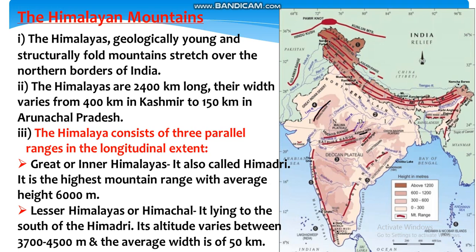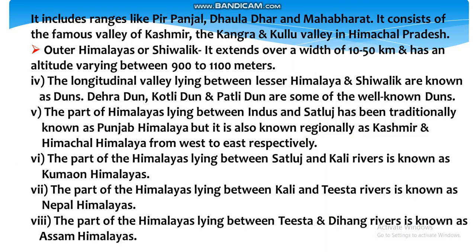Second: the Lesser Himalayas or Himachal, lying to the south of Himadri. Its altitude varies between 3700 to 4500 metres and the average width is 50 km. Nimna Himālaya yā Himāchal, yah Himadri ke dakṣiṇ meṃ sthit hai; iskī ūṃcāī 3700 se 4500 metre ke bīc hai aur ausat caurāī 50 km hai. It includes ranges like Pir Panjal, Dhauladhar and Mahabharata, and consists of the famous valleys of Kashmir, Kangra and Kullu in Himachal Pradesh.